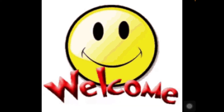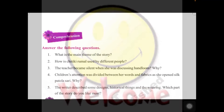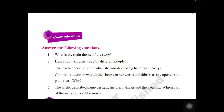Let us go into the comprehension first. Look at the comprehension questions given here: What is the main theme of the story? How is the chitki rumal used by different people? Why did the teacher become silent when discussing handloom? Why was the children's attention divided between her words and the fabrics as she opens the silk patola saree? Why did the writer describe some designs, historical things, and the weaving?